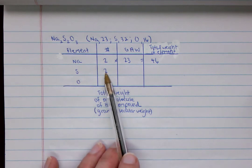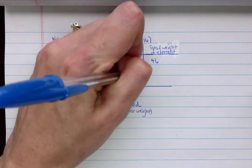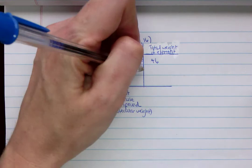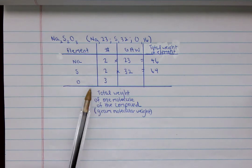And then we do the same thing for here. So sulfur, we have two of them, and its gram atomic weight is 32. Multiply that together, we get 64.